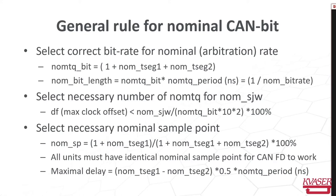The general rules for these parameters: first, you must set the correct bit rate. The bit rate is calculated by taking the number of time quanta in TSEG1, adding the number of time quanta in TSEG2, and adding the sync segment of 1 — this gives the number of time quanta making up one nominal bit. If you multiply that number of time quanta by the period in nanoseconds of each time quantum, you get the bit length, and one over that bit length gives you the bit rate.